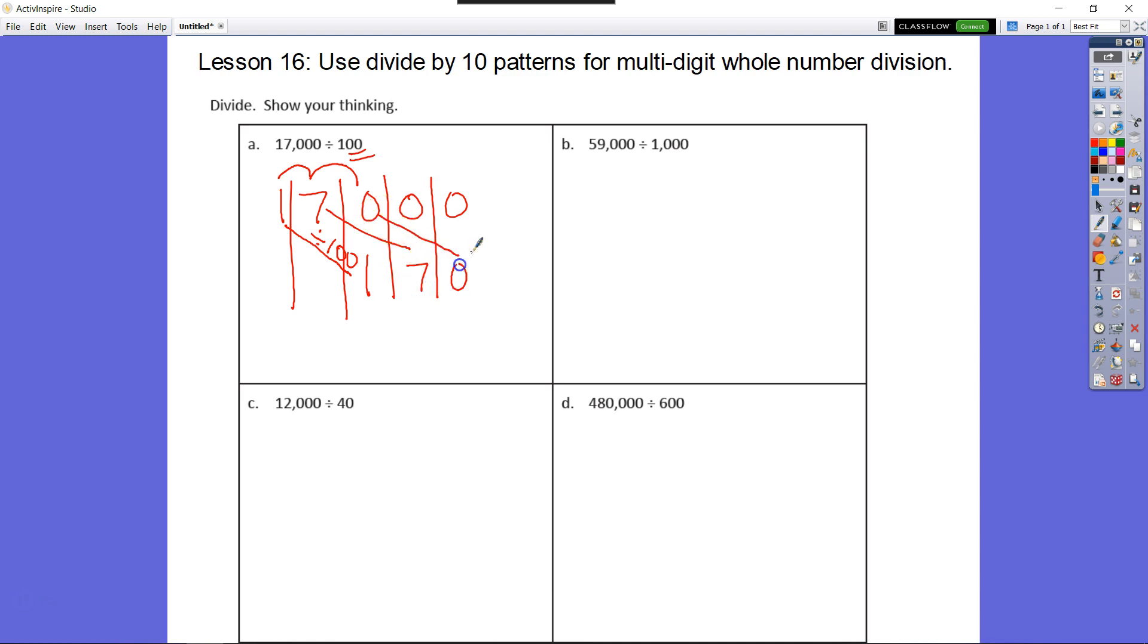So seven's going to be here, and zero's going to be here. These other two zeros we don't need, but they will be over one and over one. That is 170.